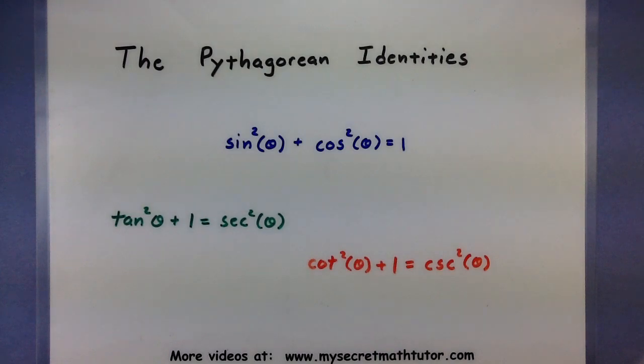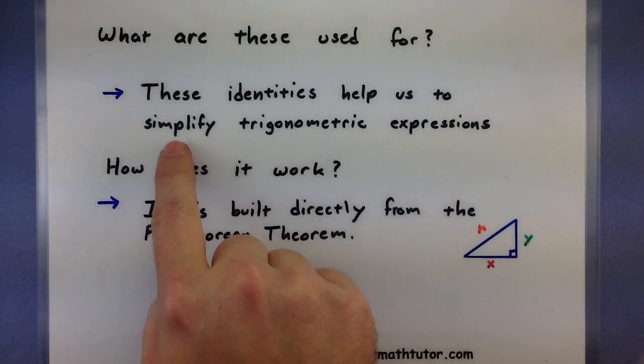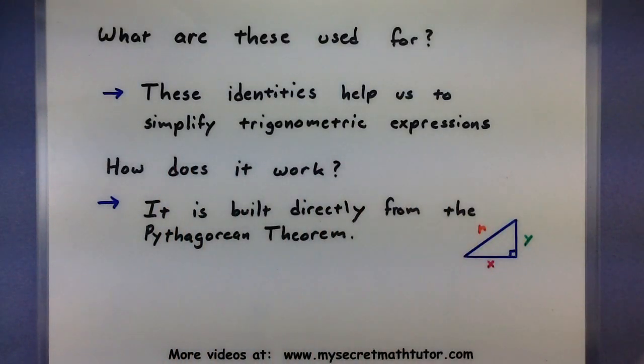So the thing that you want to know about these identities is first, what on earth are they used for? Well the most important thing about all these identities is they help us simplify trigonometric expressions. A lot of times you get lots of different things in your trigonometric expressions, they can get very complicated, and these ones will usually help us crunch them down quite a bit.